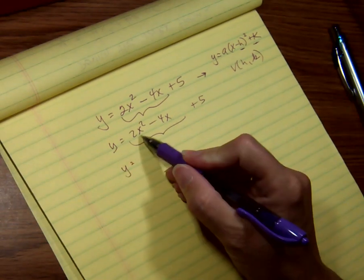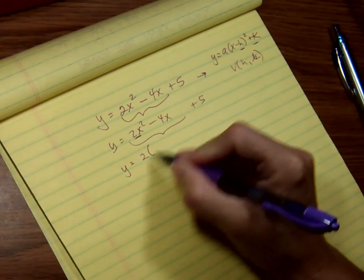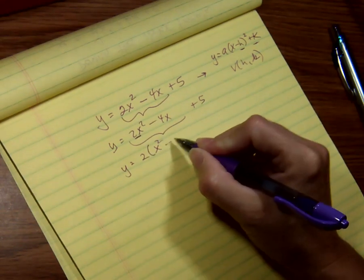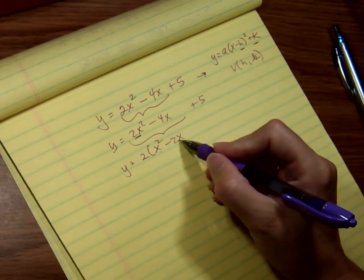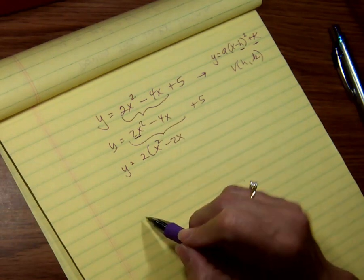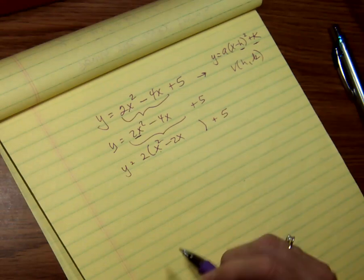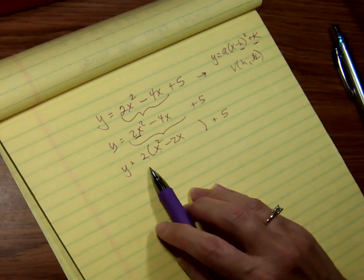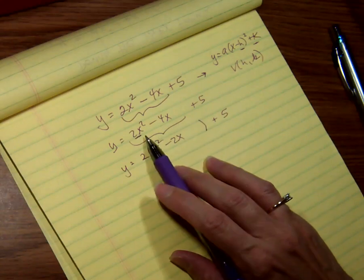So to complete the square, this has to be a 1, not a 2. So the best I can do is factor it out. So I'm going to factor it out of these two so that I have my x squared. If I distribute it back through, I have a 2x squared and a minus 4x. And I'm just going to leave a little space and put my 5. So as you look back through this, you'll see that I still have the same value that I started with.